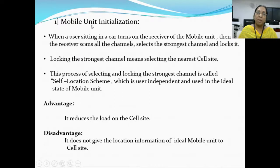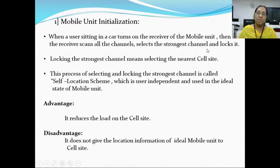The first operation is mobile unit initialization. When a user sitting in a car turns on the receiver of the mobile unit, the receiver will scan all the channels, select the strongest channel, and lock it. Whenever we turn on our mobile, the mobile receiver will scan all the cell sites nearby and select the strongest cell site tower and lock it.